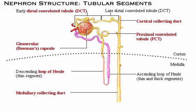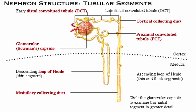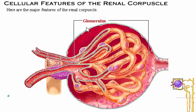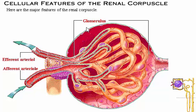The next several pages will follow the flow of fluid through the nephron and discuss the unique characteristics of the specialized cells in each segment. The glomerulus, with its larger incoming afferent arteriole and smaller outgoing efferent arteriole, is nested within the glomerular capsule, something like a fist thrust into a balloon.